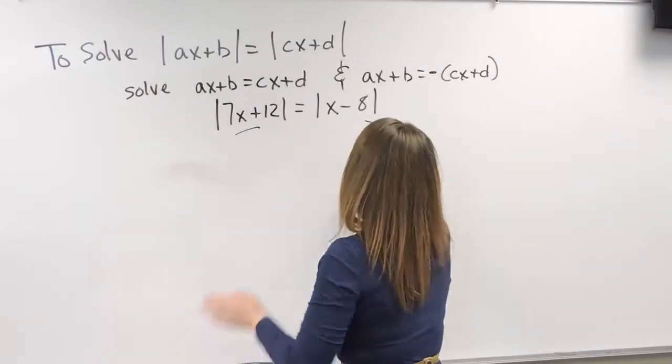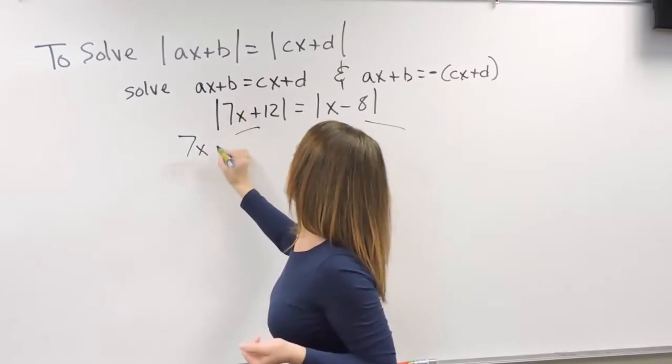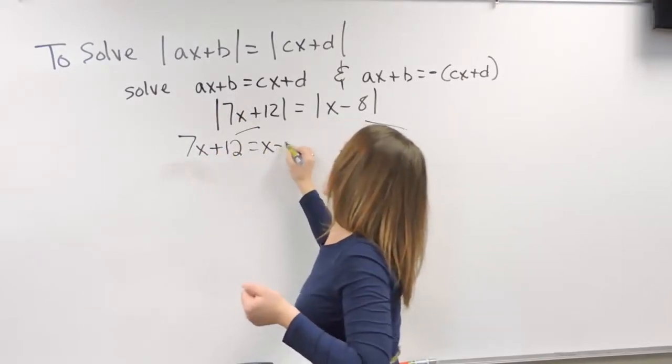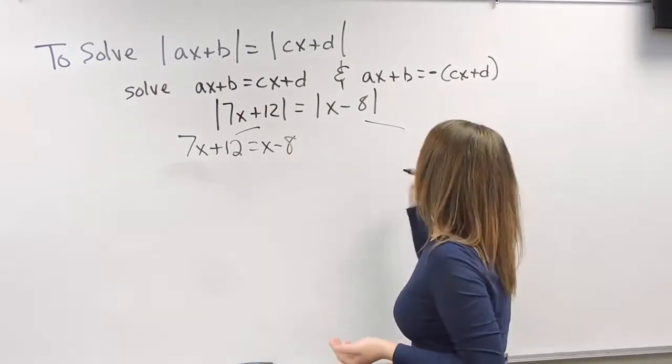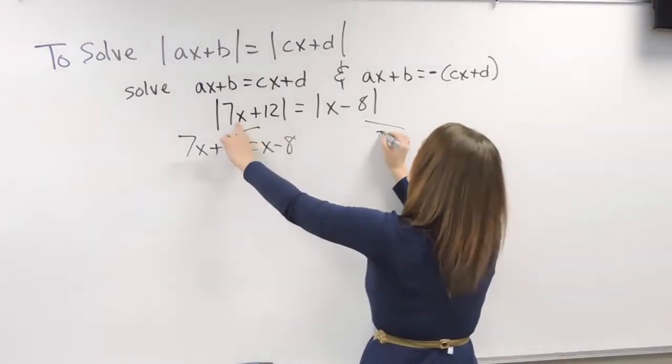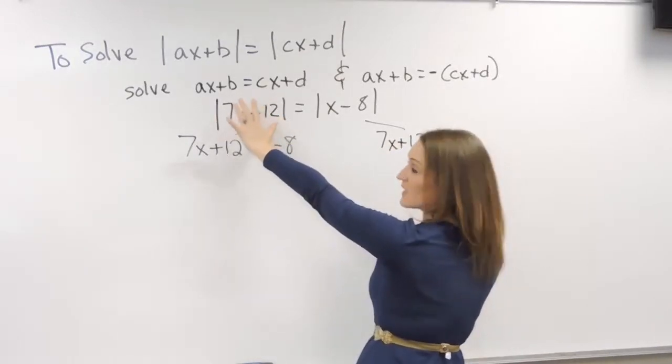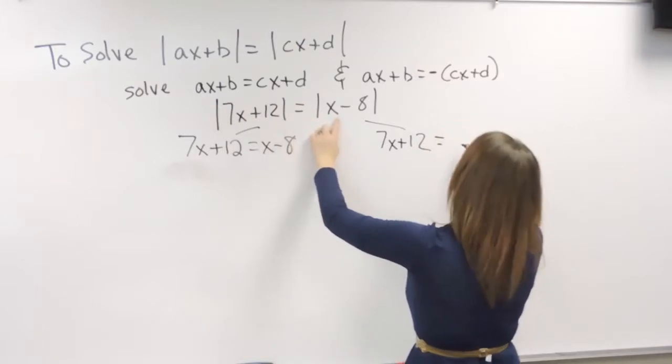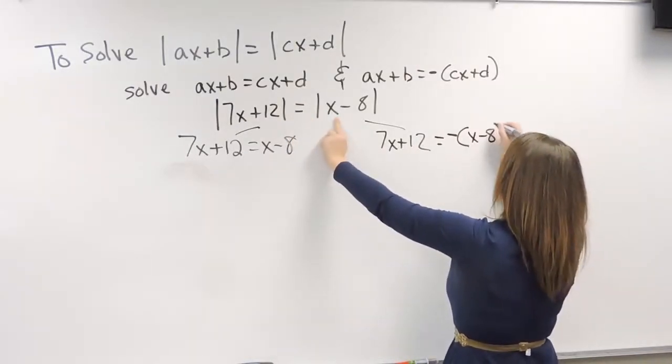So this is what that's going to look like then. So splitting this up into two different equations. The first one is our number one. 7x plus 12 is equal to x minus 8. Nothing changes there. The second equation will be 7x plus 12. That always stays the same on the left-hand side. Is equal to, we're going to take the opposite of x minus 8.